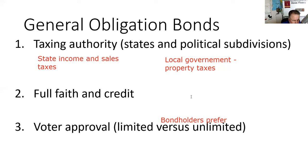Walt Disney, when he built Disneyland, kind of blew it. He had 80 acres in the political subdivision called Anaheim, in Orange County. When he wanted to build the Matterhorn, the city said they didn't have a fake mountain in the code book. Walt asked what was close, and they said 'gymnasium.' So he said he was building a gymnasium that looks like a mountain. To this day, there is a basketball rim in the Matterhorn.